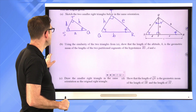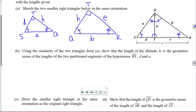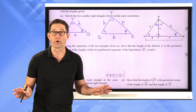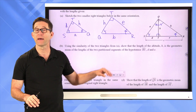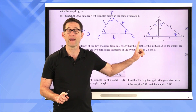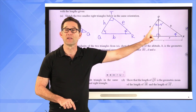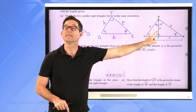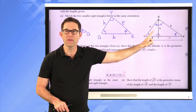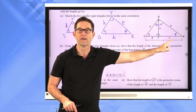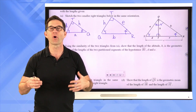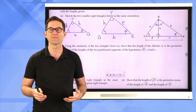Letter B asks: using the similarity of the two triangles, show that the length of altitude H is the geometric mean of the two partitioned segments of the hypotenuse, D and E. What we're trying to prove is that the altitude length H is the geometric mean of D and E — the two partitioned lengths of the hypotenuse.